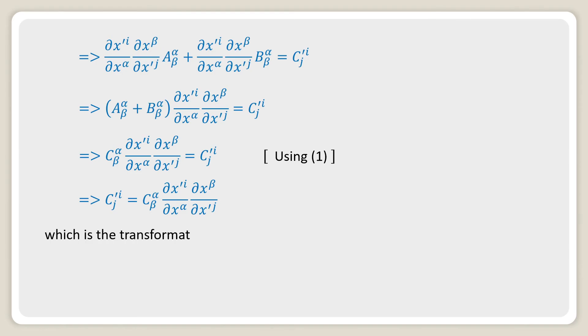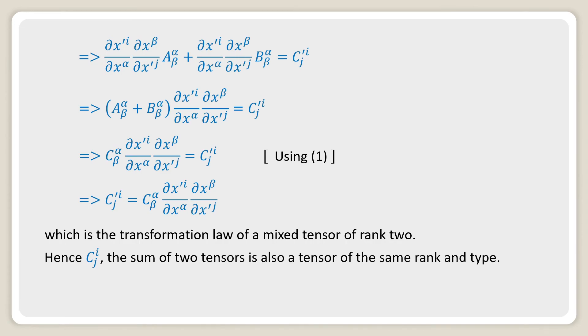Which is the transformation law of a mixed tensor of rank 2. Hence C^i_j, the sum of two tensors, is also a tensor of the same rank and type. Similarly, we can prove for difference by replacing the positive sign with a negative sign.